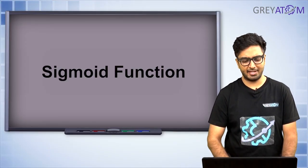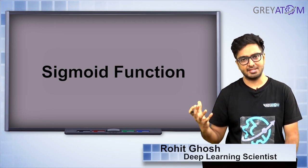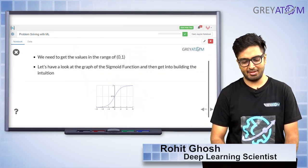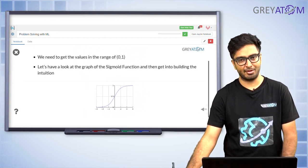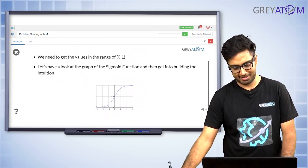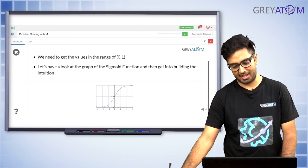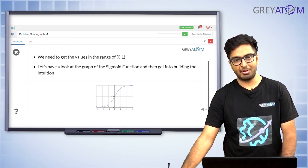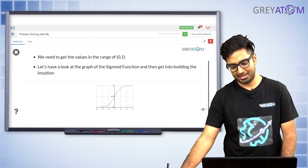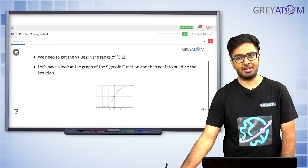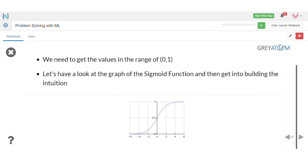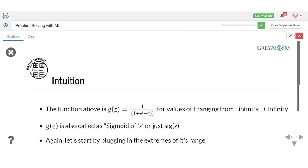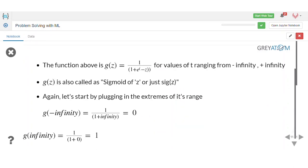So what is the sigmoid function? As already explained, we need to get values in the range 0 to 1. Looking at the graph of sigmoid function, you can clearly see it's bounded between 0 and 1. The maximum value it can go up to even at infinity is 1, and the minimum value is 0. The midline value of y equals 0.5 happens at x equals 0.